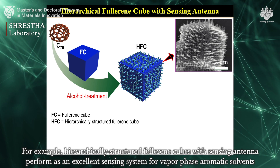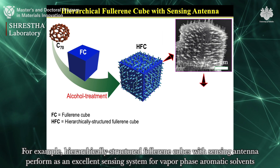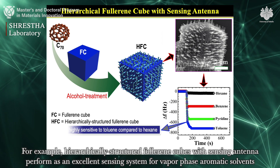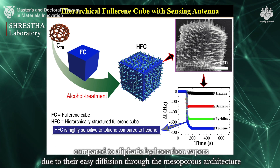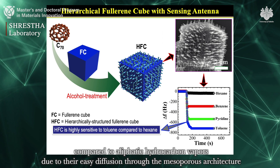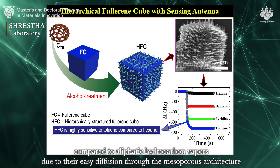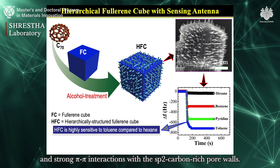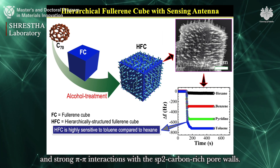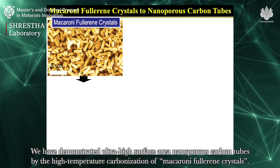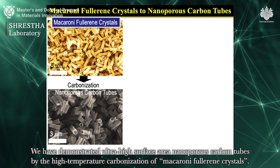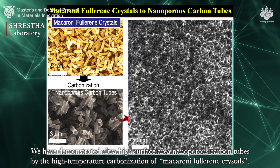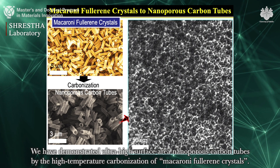For example, hierarchically structured fullerene cubes with sensing antennae perform as an excellent sensing system for vapor-phase aromatic solvents, compared to aliphatic hydrocarbon vapors due to their easy diffusion through the mesoporous architecture and strong pi-pi interactions with the SP2 carbon-rich pore walls. We have demonstrated ultra-high surface area nanoporous carbon tubes by the high temperature carbonization of macaroni fullerene crystals.